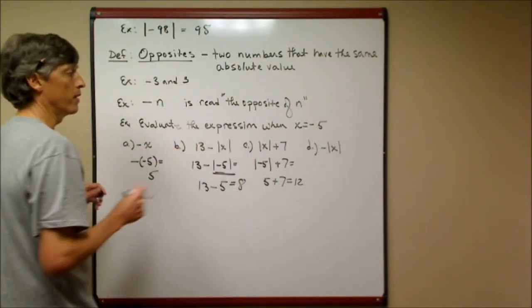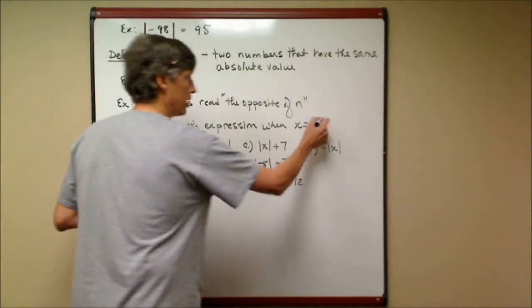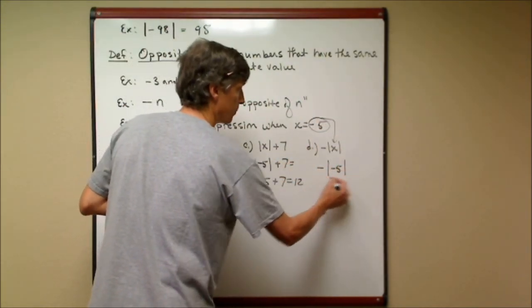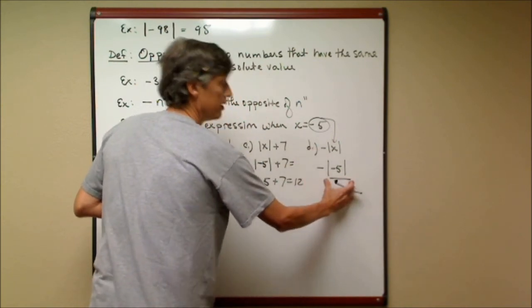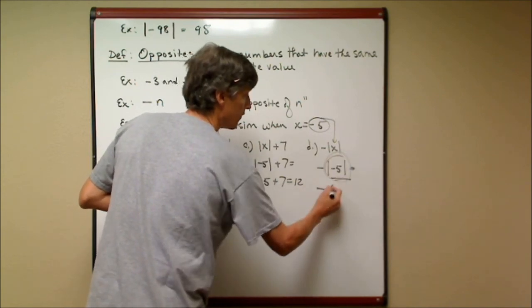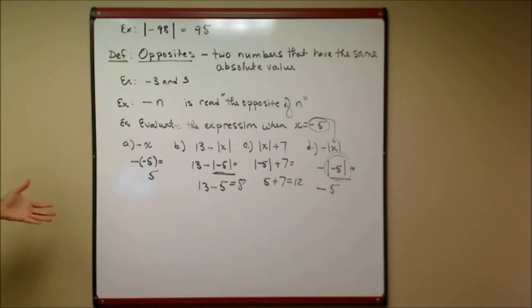The last one has an opposite sign in front of the absolute value. Substituting negative 5, we have: the opposite of the absolute value of negative 5. First, the absolute value of negative 5 is 5. So this becomes the opposite of 5, which is negative 5. You'll get good at these with practice — be sure to take notes so you can refer back, and as always, practice, practice, practice.